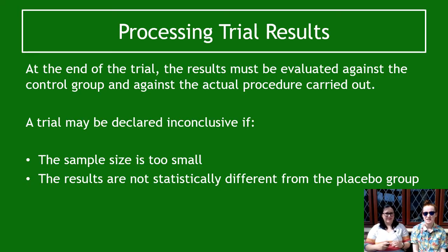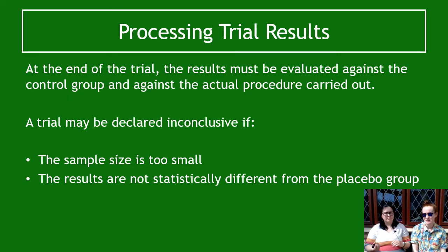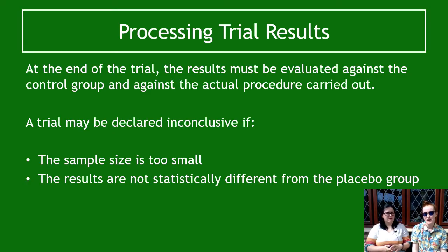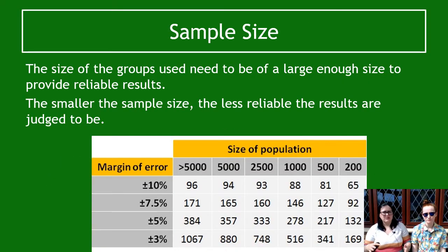When processing trial results, you take all the results and evaluate whether the treatment is effective. You compare the control group with those actually receiving the treatment. A trial can be declared inconclusive if the sample size is too small — for example, testing only 10 people would be inconclusive because they might be oddly similar. It's also inconclusive if the results are not statistically different from the placebo group, meaning there's not a big enough difference in the numbers of people getting better compared to those taking the placebo.